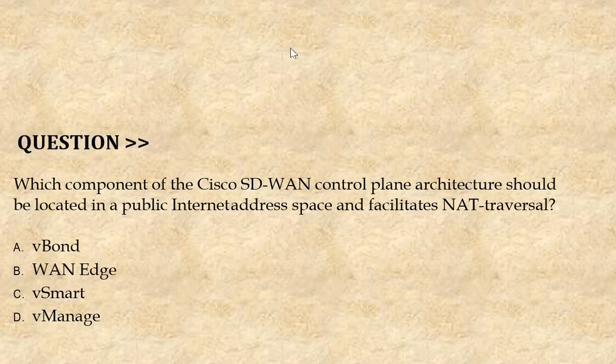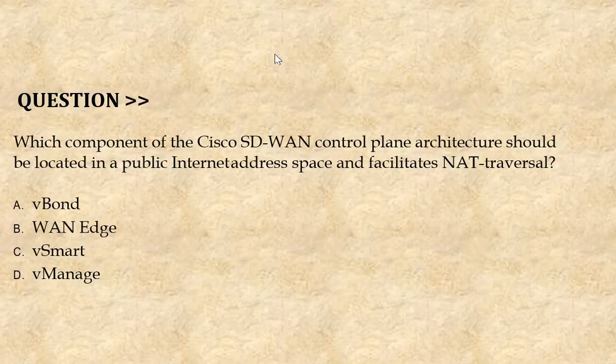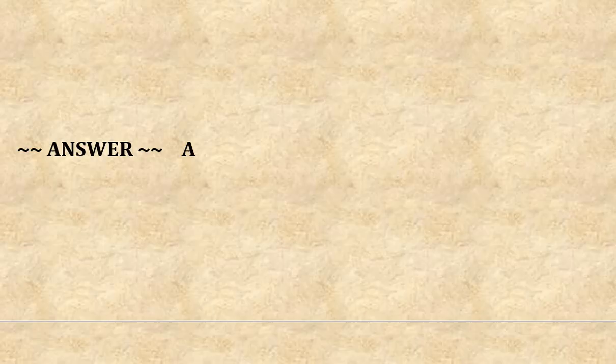Our next question is: which component of the Cisco SD-WAN control panel architecture should be located in a public internet address space and facilitates NAT traversal? Option A: VBond. Option B: VAnage. Option C: VSmart. Option D: VManage. The correct answer is Option A.